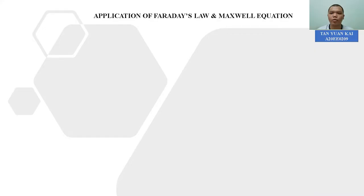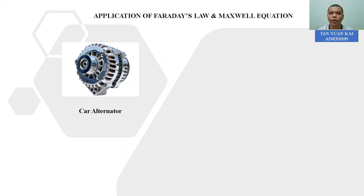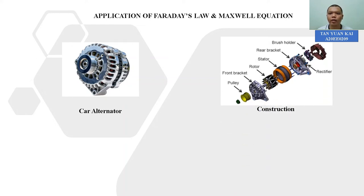First, I would like to share the car alternator as one of the examples of Faraday's Law and Maxwell equation. The car alternator consists of pulley, rotor, stator, and rectifier as the main components of the alternator. But how does an alternator work?